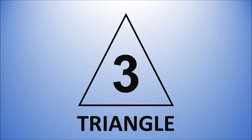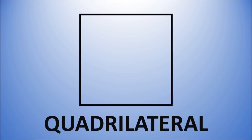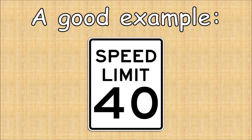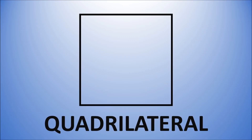A triangle has three sides. A quadrilateral has four sides and four angles made from straight lines. A good example is a speed limit sign. A quadrilateral has four sides.